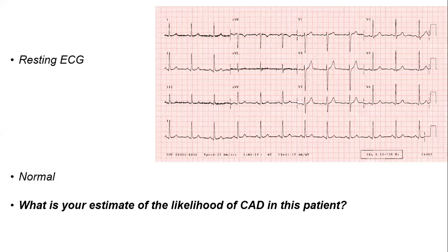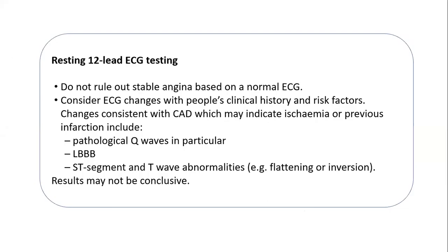The likelihood of coronary artery disease is estimated based on clinical history and risk factors. A normal 12-lead ECG does not help us to rule out stable angina, so if it is normal, we proceed with clinical history and risk factors. If there are ECG changes — like pathological Q wave, left bundle branch block, or ST-segment and T-wave abnormalities — this may indicate ischemia.